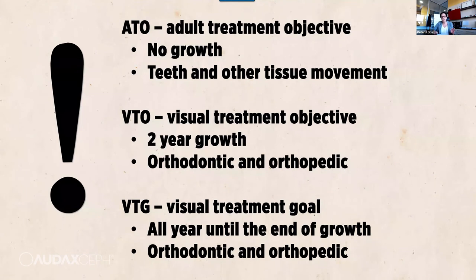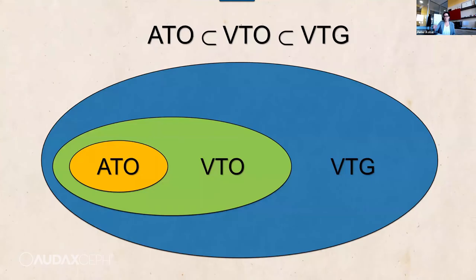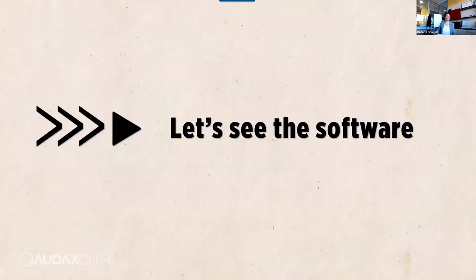There are different abbreviations for the process of computerized planning and prediction. ATO stands for adult treatment objective. VTO includes up to two years of skull growth. VTG means visual treatment goal and can predict growth to maturity. ATO is a subset of VTO, and VTO is a subset of VTG. Now let's see the software.